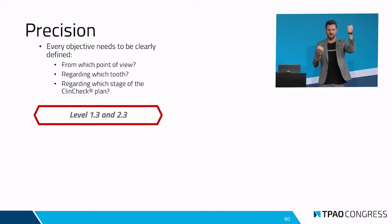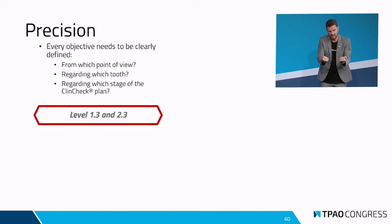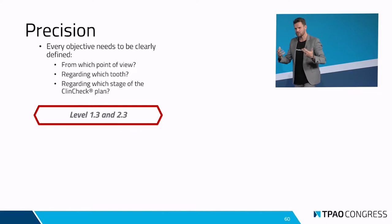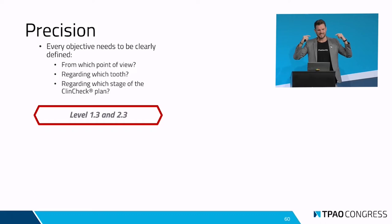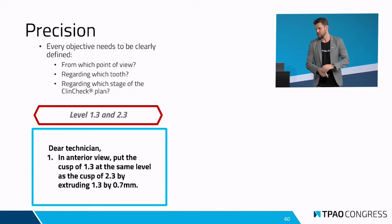Gehen wir mal davon aus, 1,3 und 2,3 sollen nivelliert werden. Wir können auf der einen Seite 2,3 extrudieren, wir können 1,3 intrudieren, wir können beide zueinander bewegen. Wir können das aus frontaler Sicht betrachten, wir können das aus oklusaler Sicht betrachten, wir können das auf die Transversale beziehen oder auch auf die Rotation. Daran sieht man schon, wie schwierig es ist – wenn wir uns in den Techniker versetzen, merken wir relativ schnell, wie schwierig und komplex das Ganze ist.